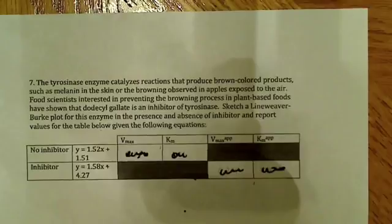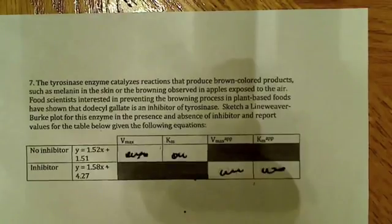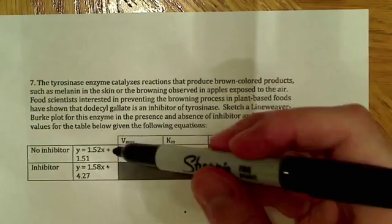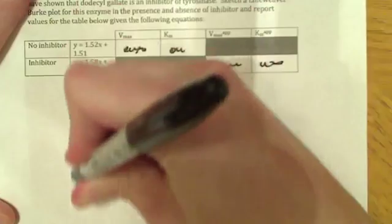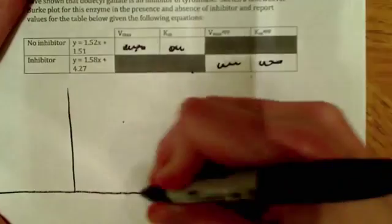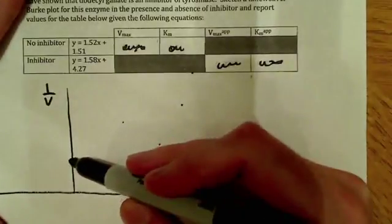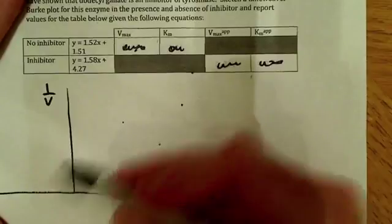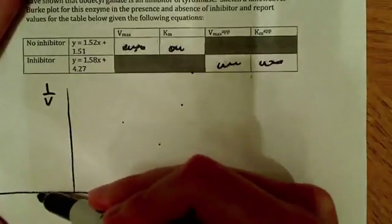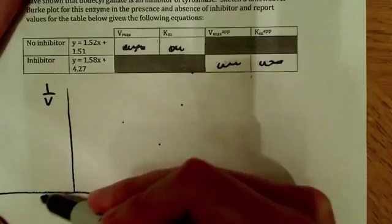What I want to do is recall what these things are on the Lineweaver-Burk plot. So let's just draw the basic axis here. I just want to kind of recall what these things are so we're not confused. So this is 1 over v, this is 1 over s. And if we recall, the y-intercept is 1 over Vmax and the x-intercept, which is going to be somewhere over here, is negative 1 over Km.